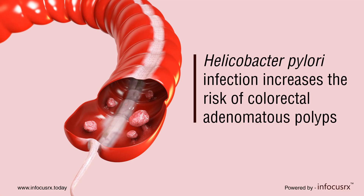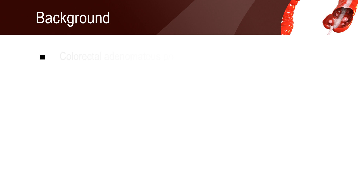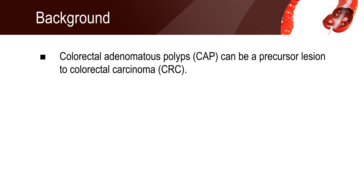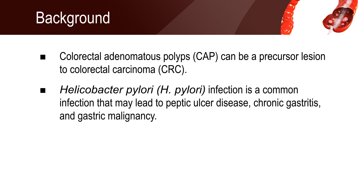Helicobacter pylori infection increases the risk of colorectal adenomatous polyps. Colorectal adenomatous polyps are non-cancerous growths, but can be a precursor lesion to colorectal carcinoma. Helicobacter pylori infection is a common infection that may lead to peptic ulcer disease, chronic gastritis, and gastric malignancy.